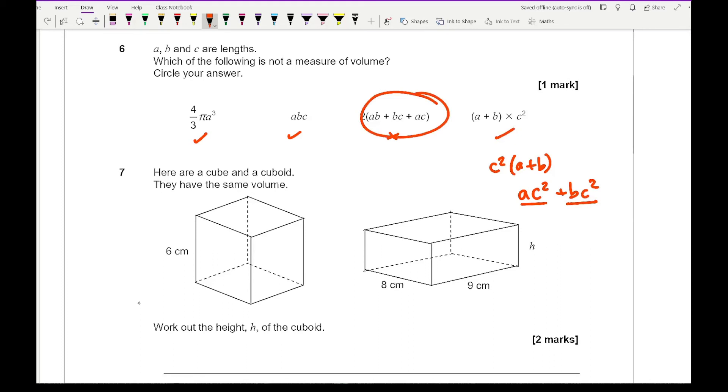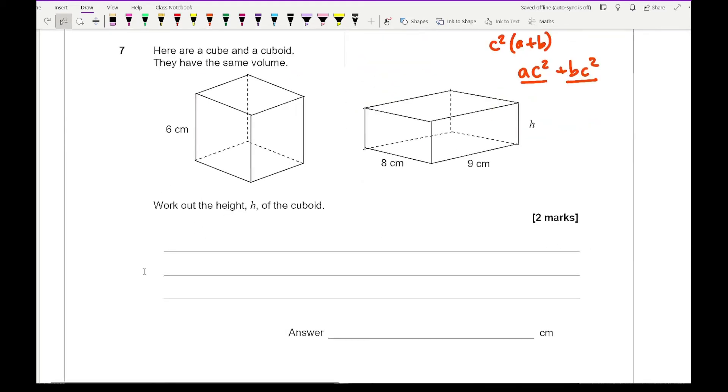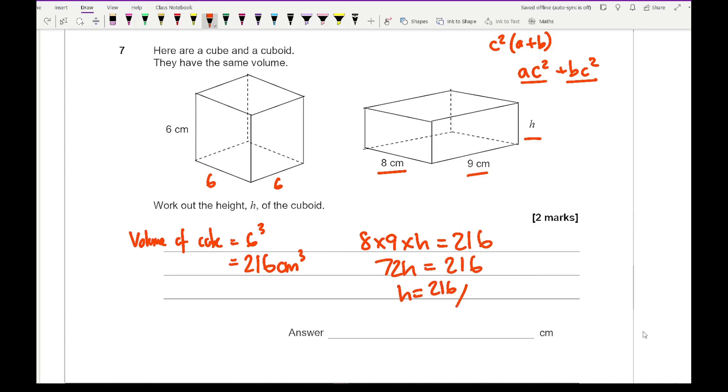Now with question 7, it says here is a cube and a cuboid. They both have the same volume. Work out the height of the cuboid. So for this, what I need to do is first of all work out the volume of the cube, which is going to be 6 cubed. So the volume of cube equals 6 cubed, so that is going to be 216 cm cubed. And then so what I'm going to do is multiply each of these things. So here I've got 8 times 9 times H equals 216. 8 times 9 is 72, so 72H equals 216. So H equals 216 divided by 72, which if I work out gives me an answer of 3.